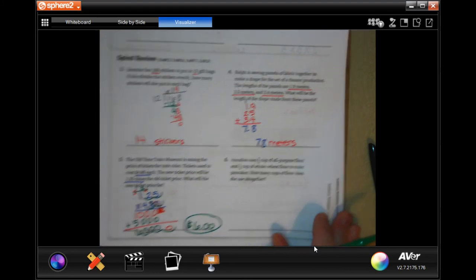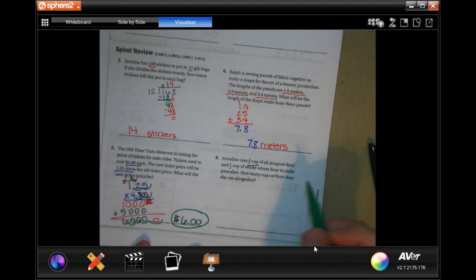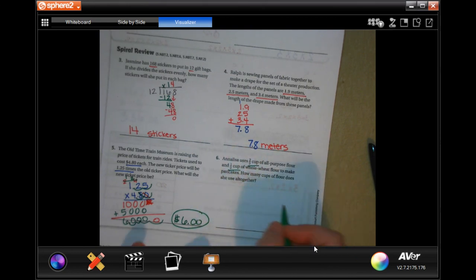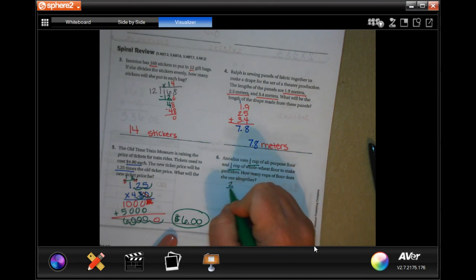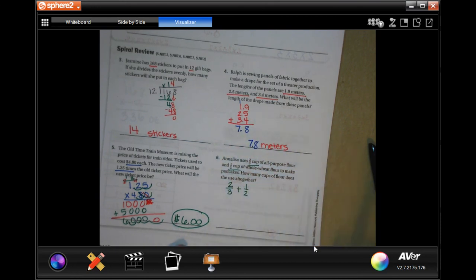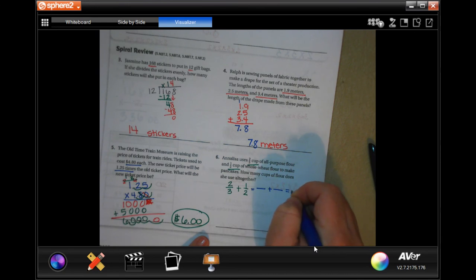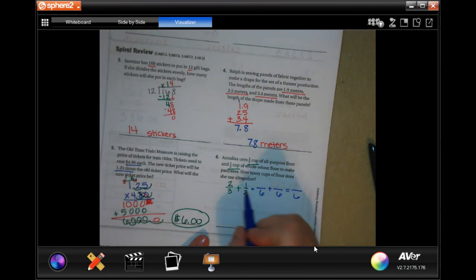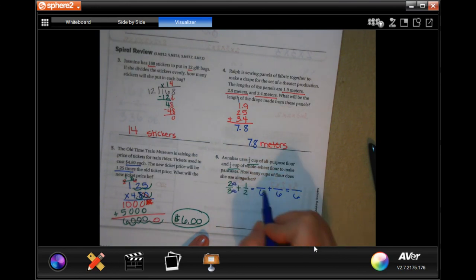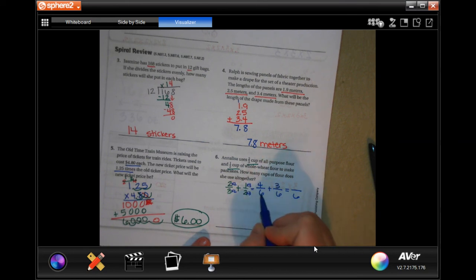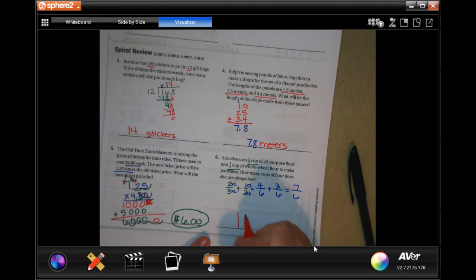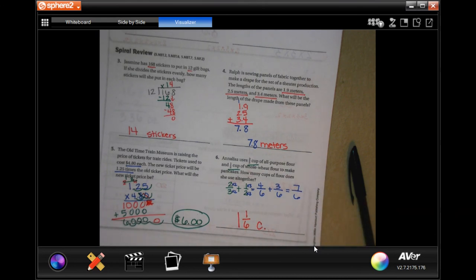Annalisa uses two-thirds of a cup of all-purpose flour and half a cup of whole wheat flour to make pancakes. How many cups of flour does she use altogether? So, two-thirds plus one-half. And we learned earlier in this chapter that you need a common denominator. The smallest number that two and three are both going to go into is going to be six. I have to multiply three by two. So, then I need to multiply the top by two. That's four. I have to multiply two by three. Multiply the top by three. That's three. Four plus three is seven. I'm going to do that mental math again. Six is going to go into seven one time. I would have one left over and my denominator stays the same. And one and one-sixth cups.